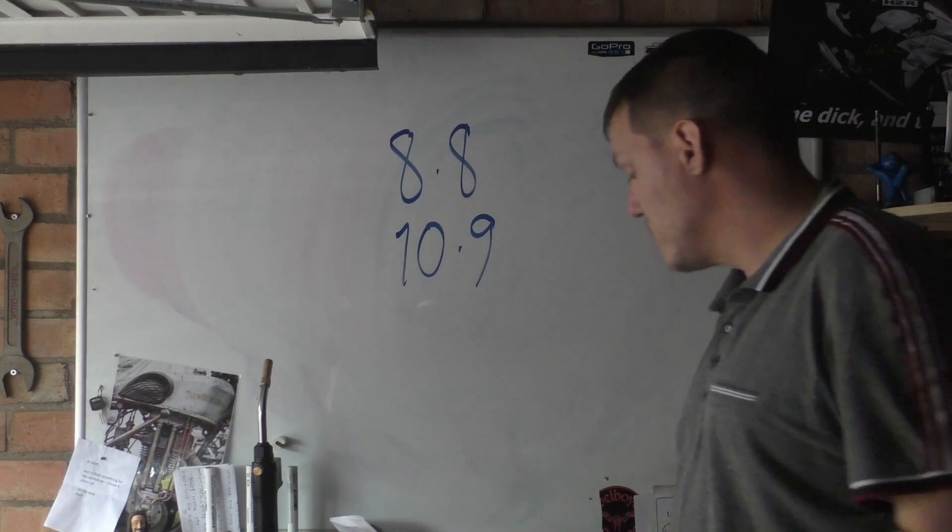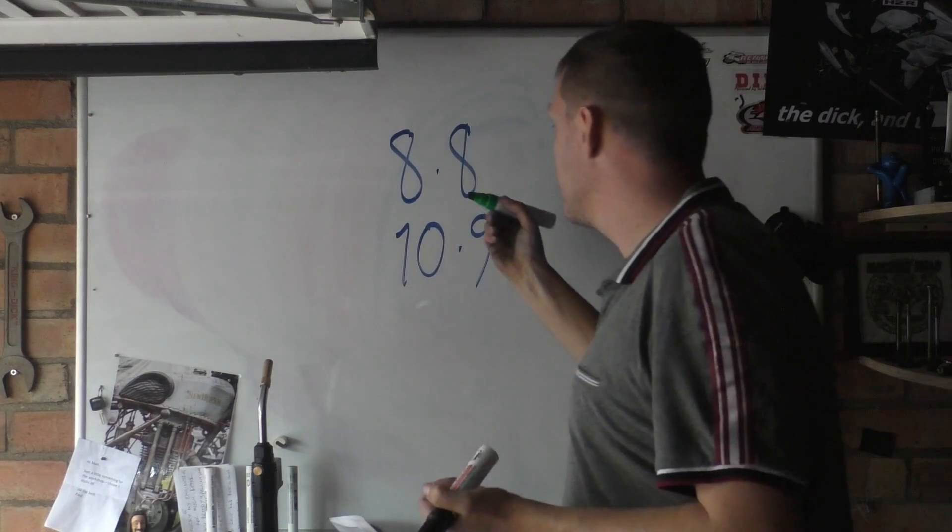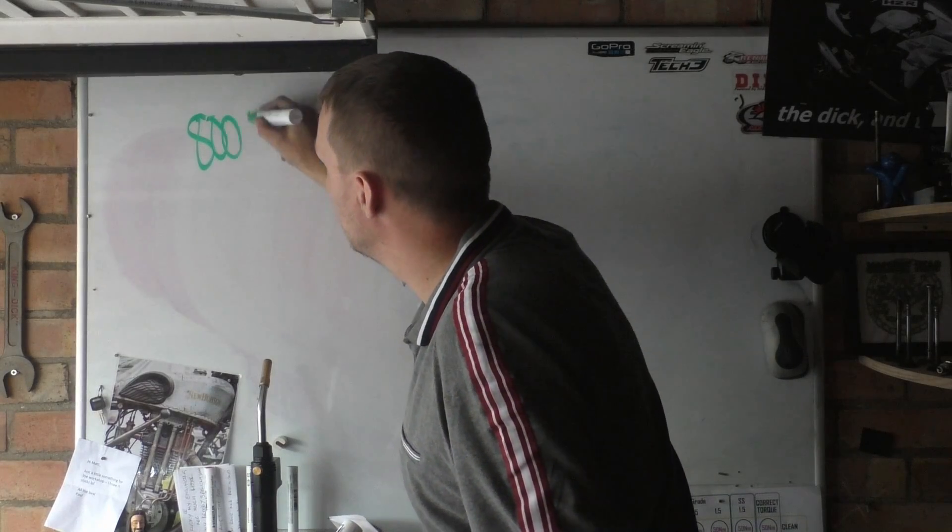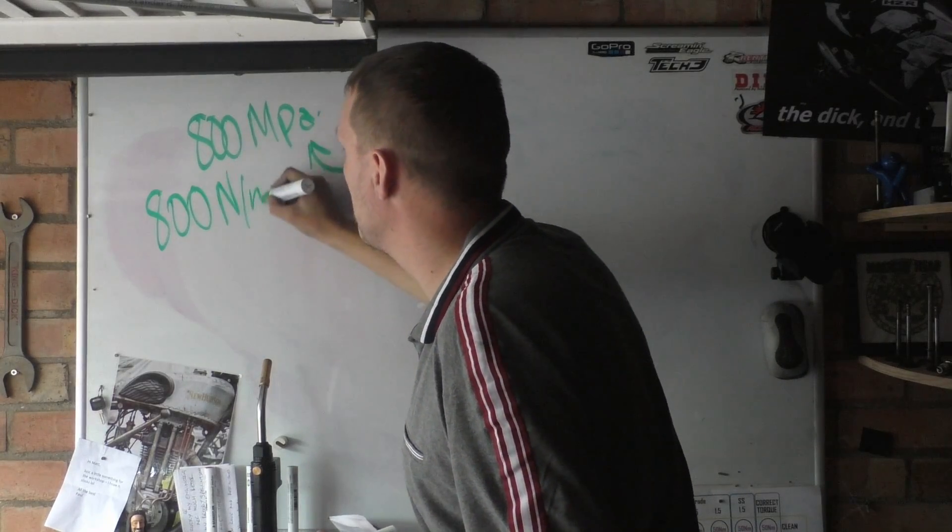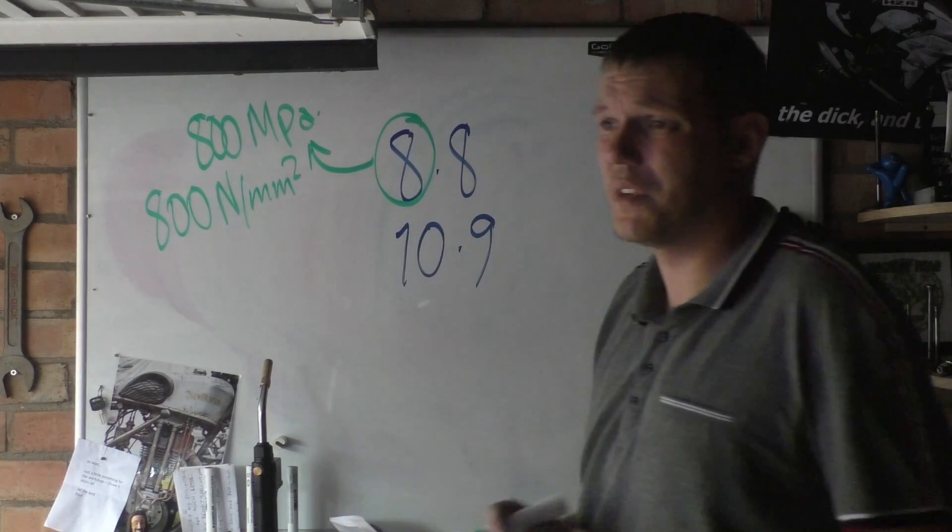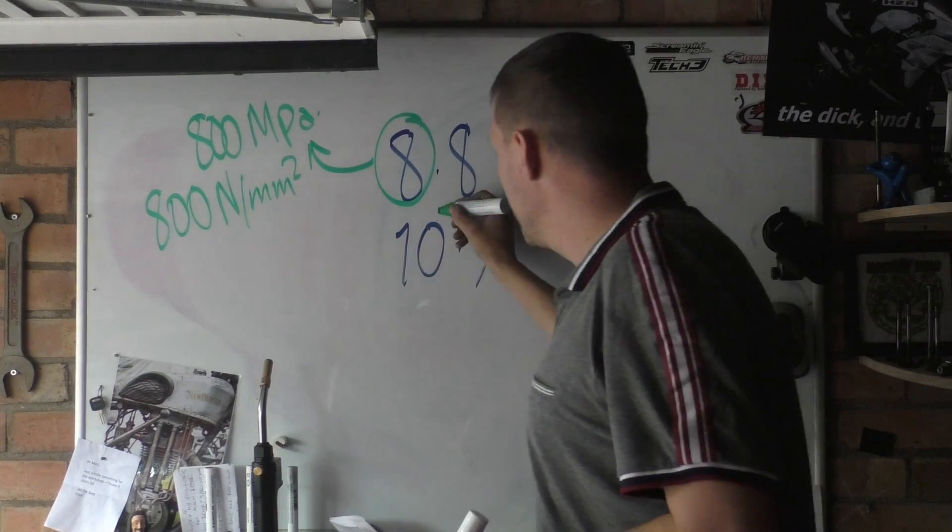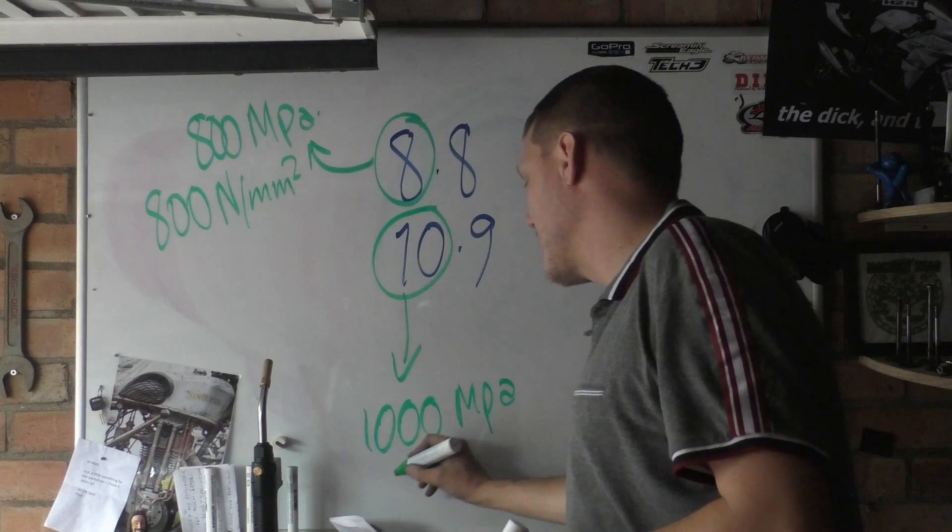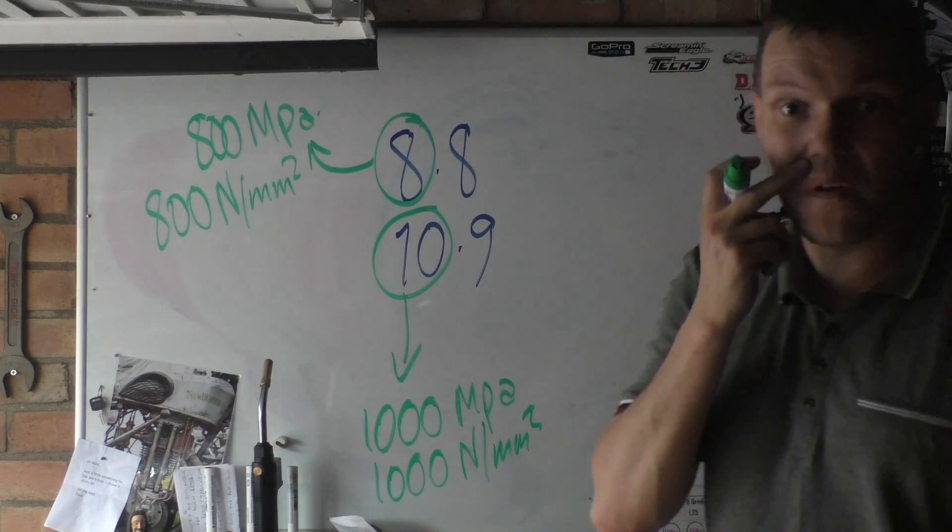So, because there's loads of units and it always helps, let's use the green. Our first number is our tensile strength. This one here. So that would be 800 megapascals or 800 newtons per millimetre squared. Megapascals is pressure and newtons per millimetre squared is pressure because that's force over an area. So that's what that first number is. So in this case, then that would be 10 or 1,000 MPa like that or 1,000 newtons per millimetre squared. All is gravy. All is fantastic.